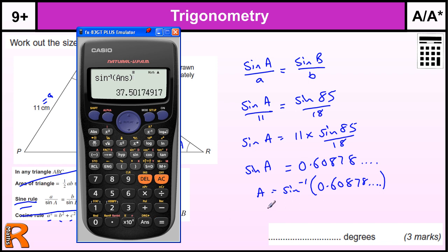So the answer to that is 37.50174917. We just want 37.5. We could round it to the nearest degree, 38, but as it's halfway between, it's probably best to leave it to three significant figures. So those are your three marks.